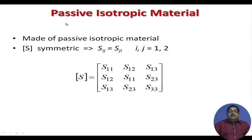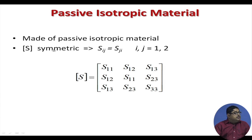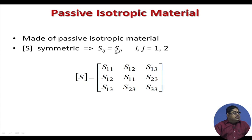We will use scattering parameters — a fundamental tool of microwave engineering discussed in our earlier NPTEL lecture — to analyze this. If any circuit is made of passive isotropic material, it is a reciprocal network, and its S-matrix becomes symmetric: S_ij = S_ji for all i, j combinations. For a three-port device, the S-matrix with symmetric property reduces in the number of independent elements.